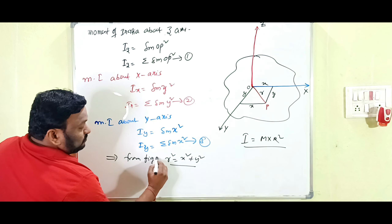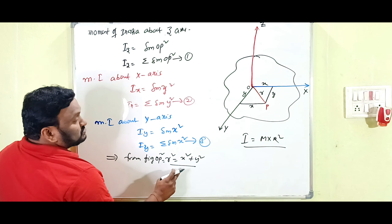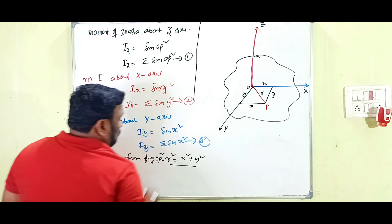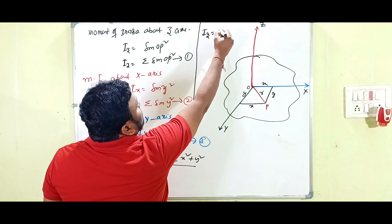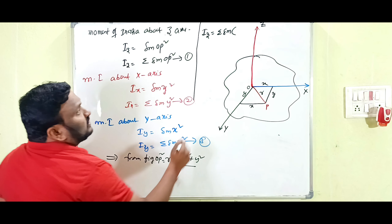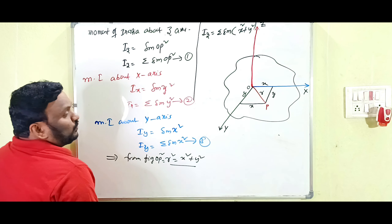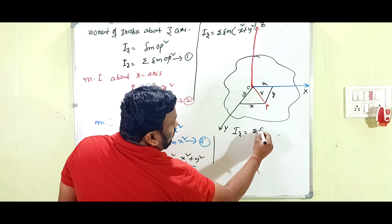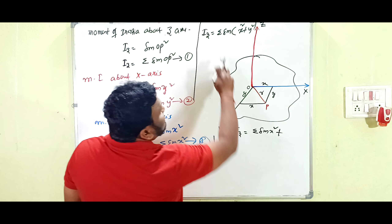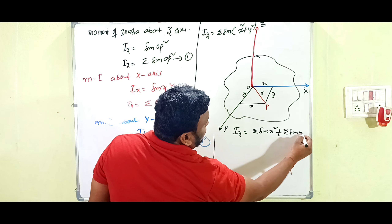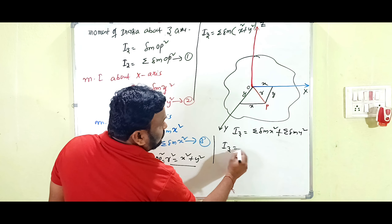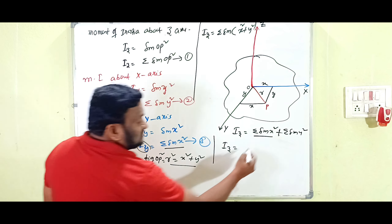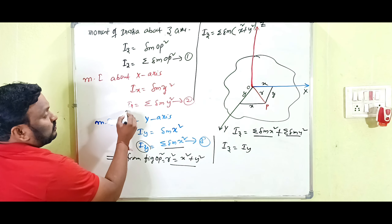Substituting OP² = x² + y² into equation (1), we get: I_Z = Σ(delta-m × (x² + y²)). Expanding this: I_Z = Σ(delta-m × x²) + Σ(delta-m × y²). From equation (3), Σ(delta-m × x²) = I_Y, and Σ(delta-m × y²) = I_X.